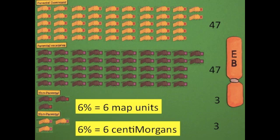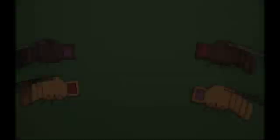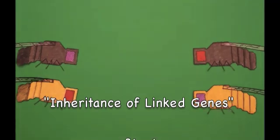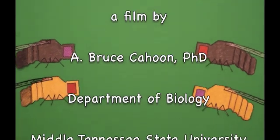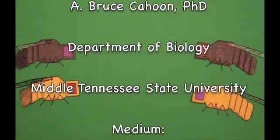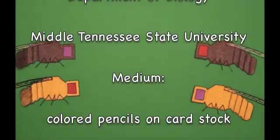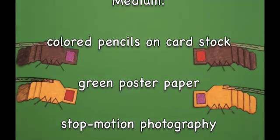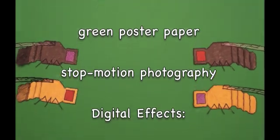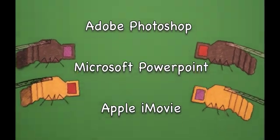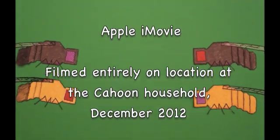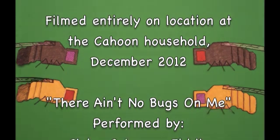Geneticists call this percentage a genetic map distance, and would describe the two genes as being six map units or centimorgans apart.